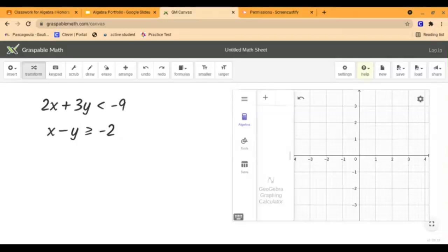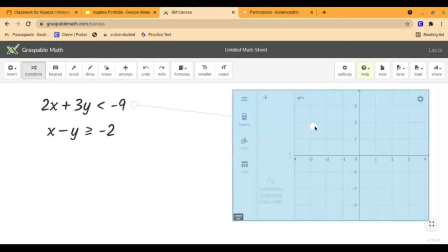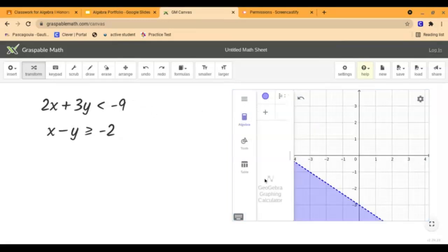Hey guys. So today I'm going to be demonstrating how to solve a system of inequalities using the Graspable Math Canvas website. So to go ahead and begin I already have both of my inequalities ready to go. So my first one is going to be 2x plus 3y is less than negative 9 and my second inequality is going to be x minus y is greater than or equal to negative 2. So to go ahead and put these on our plot all we have to do is find this little white dot next to each inequality and drag it over onto our graph until it lights up and let go and it's going to graph it on there for us with no typing in necessary.